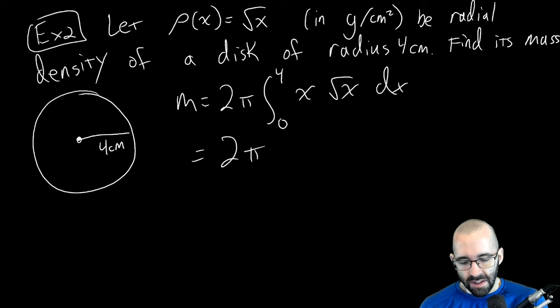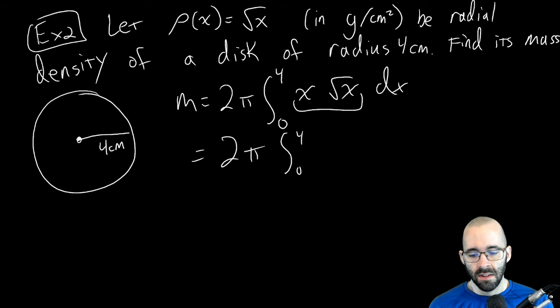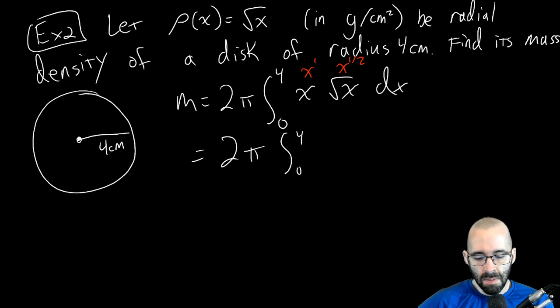Let's see if I can do this - see if I remember how to do an integral. First off, we need to combine these. This is x to the first, this is x to the one half. Multiplying monomials, we just add the exponents if they have the same base, which they do.